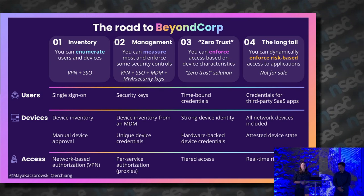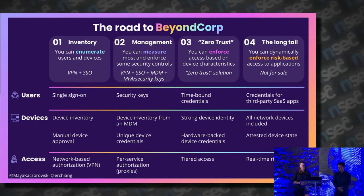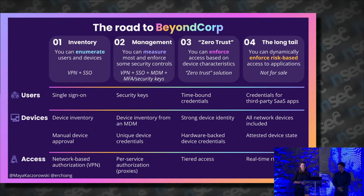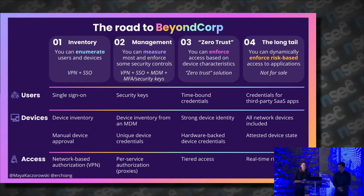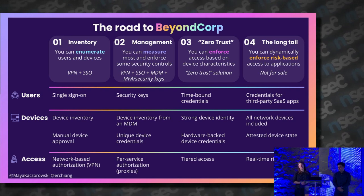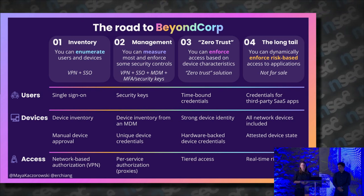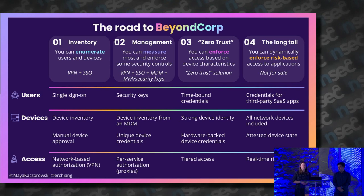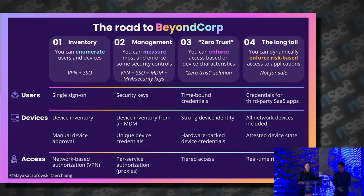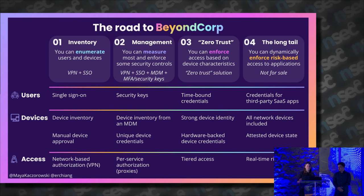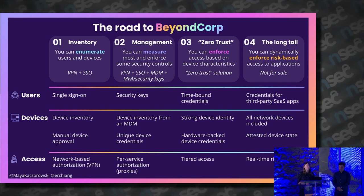At Level 3, you're all in on what the market calls zero trust architecture, and you've maybe even bought a solution that brands itself that way. What you can do is enforce tiered access to applications based on device characteristics. Level 4 is what many people aspire to but no one has yet fully achieved: dynamically enforcing risk-based access to applications. There's a long list of user, device, and access issues — such as SaaS apps — that are very hard to get right today.